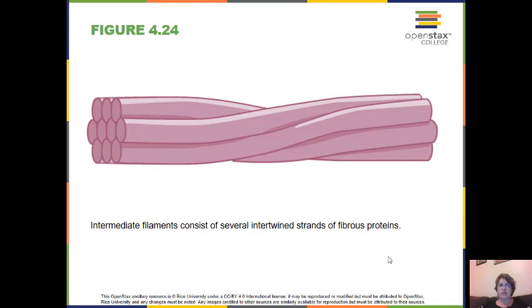The next are intermediate filaments. Their diameter is 8 to 10 nanometers, between a microfilament and a microtubule. They have no role in cell movement; their function is purely structural. They bear tension, thus maintaining cell shape, and anchor the nucleus and other organelles in place. They are the most diverse group of cytoskeletal elements. Several fibrous protein types are in the intermediate filaments. You're probably most familiar with a protein called keratin, the fibrous protein that strengthens your hair, nails, and the skin's epidermis.